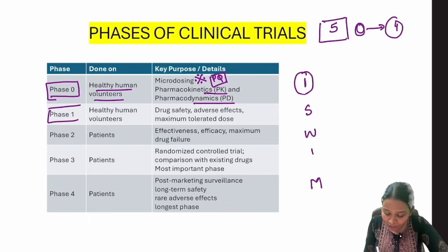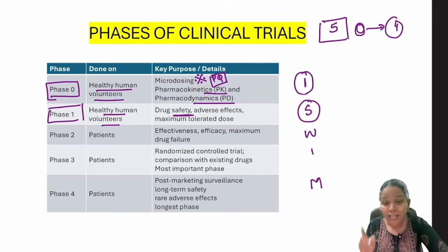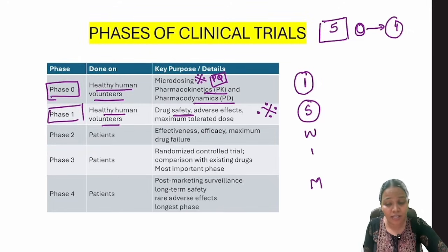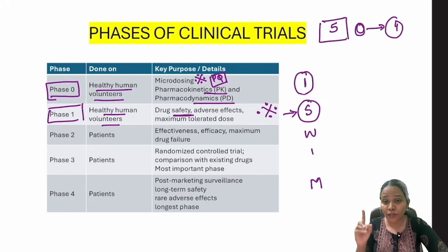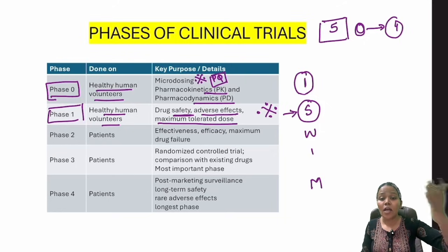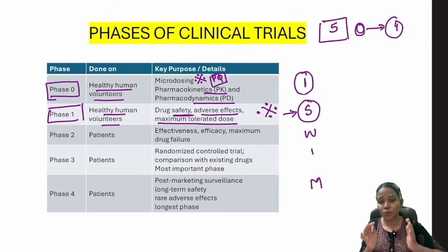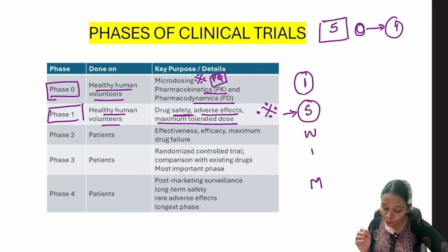Next comes Phase 1 — the 'S' in I SWIM stands for Safety. In Phase 1, in the same healthy volunteers, you give the proper dose and assess safety. The keywords to remember are: safety is assessed in Phase 1. Here you check adverse effects and the maximum tolerated dose — what is the maximum dose you can give without causing adverse effects and while staying safe.